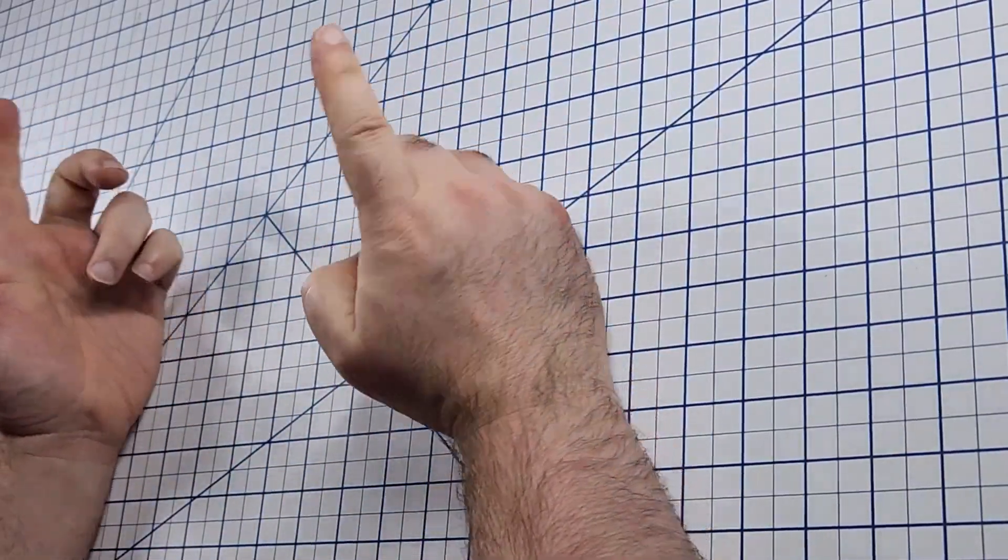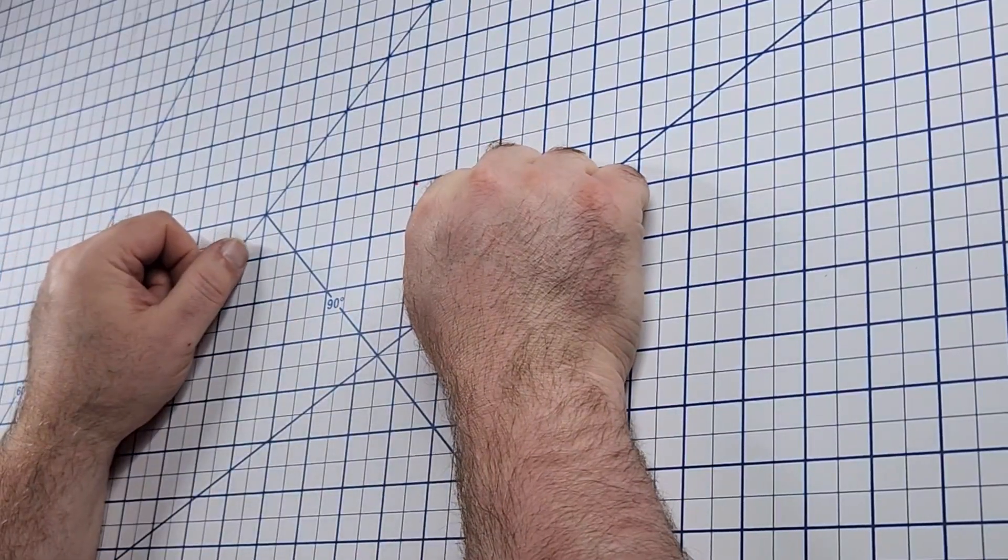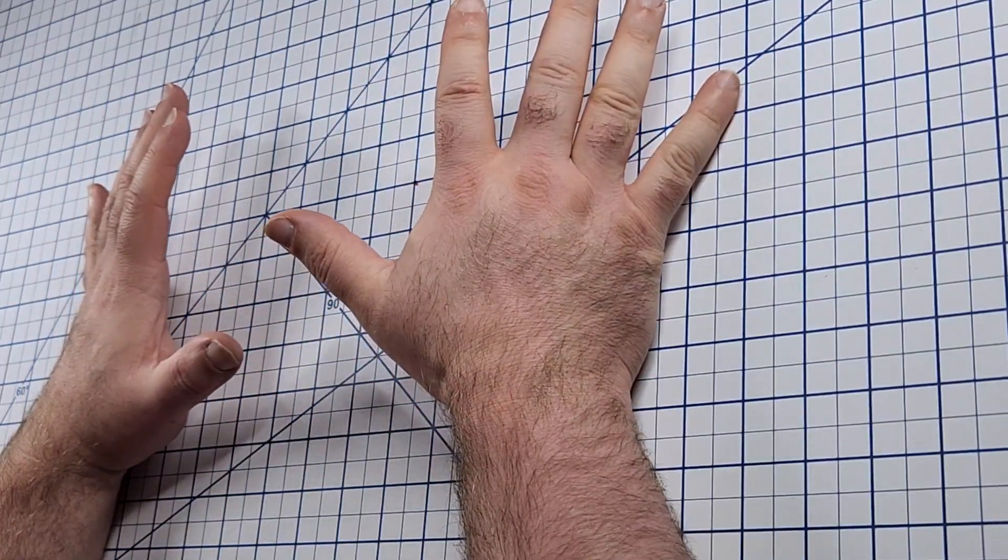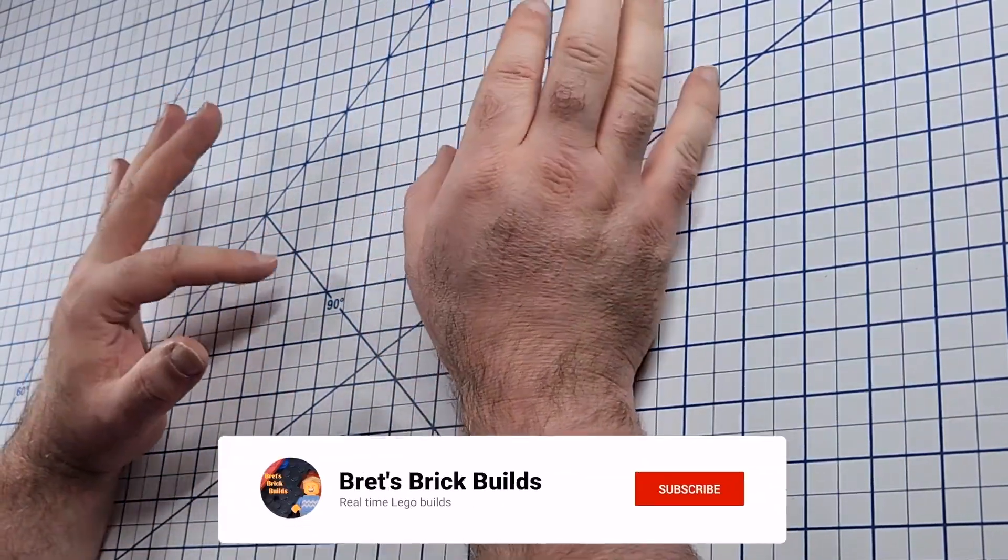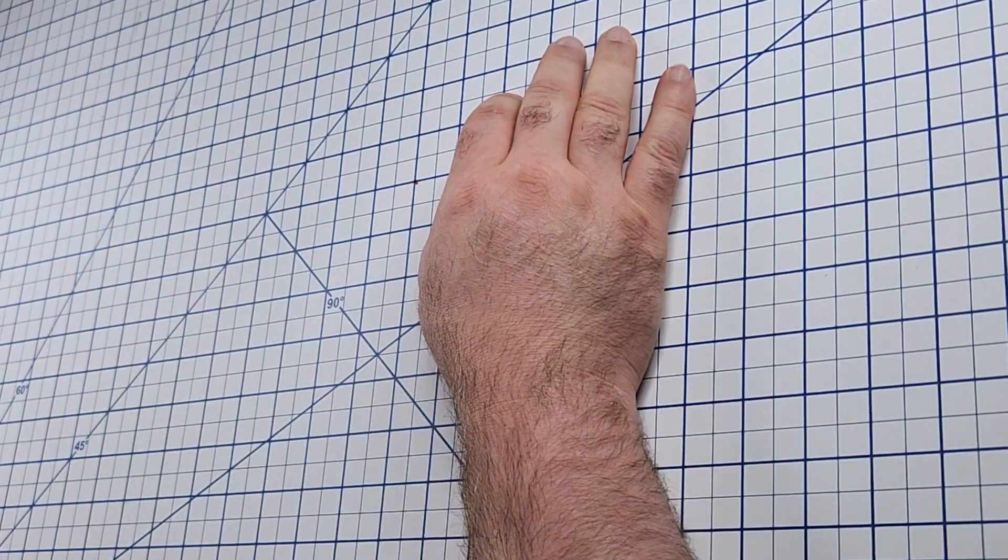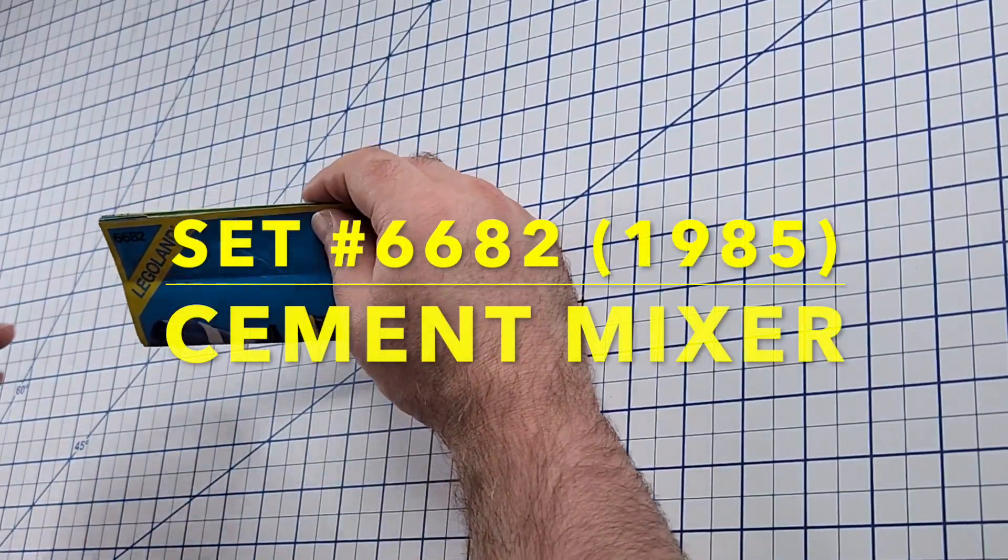Hi everybody, I'm Jason. That is Brett. And on this episode of Brett's Brick Builds, we've got a kit all the way back from 1985. So would that be 38 years ago? 38 years ago. 38 year old kit. It is kit number 6682 cement mixer.